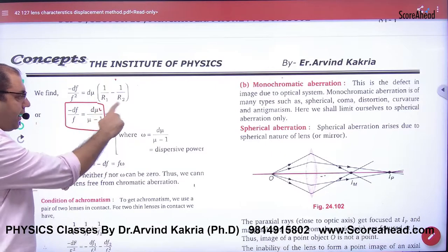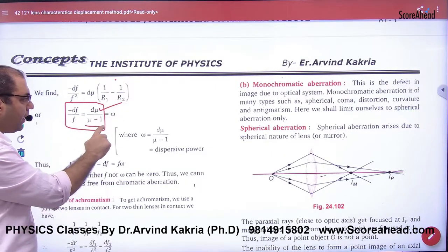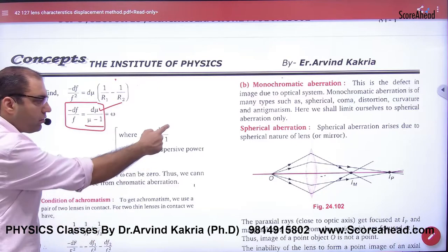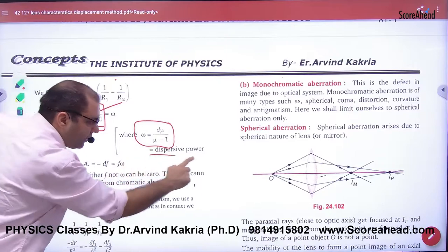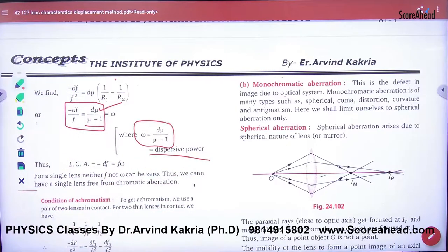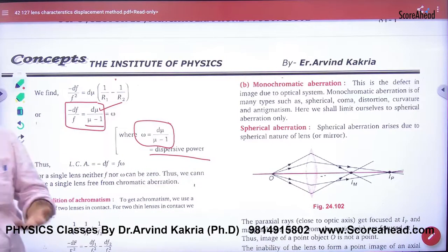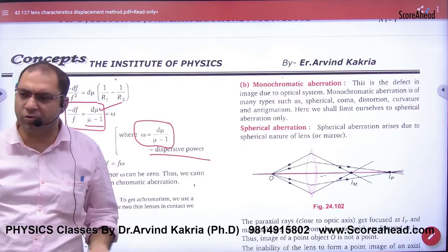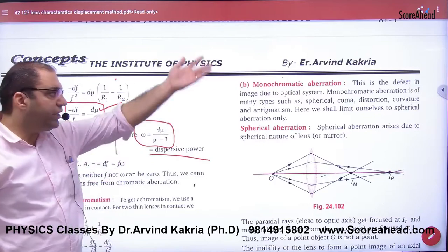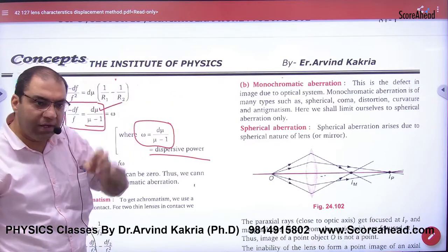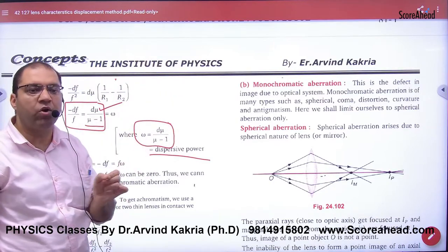In the numerator, change in refractive index. Mark this as a formula: dμ/(μ-1) is the dispersive power of a lens. So if an objective question asks about dispersive power of a lens, this formula will come: dμ divided by μ-1.